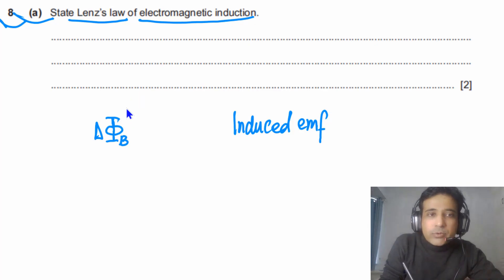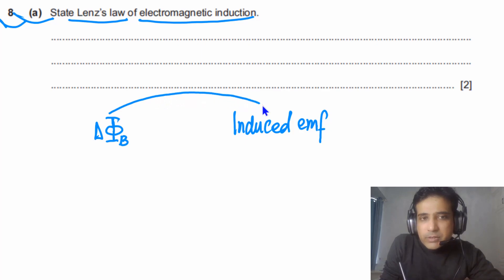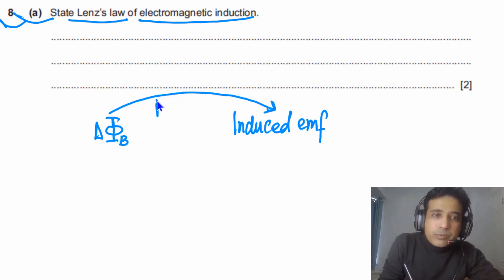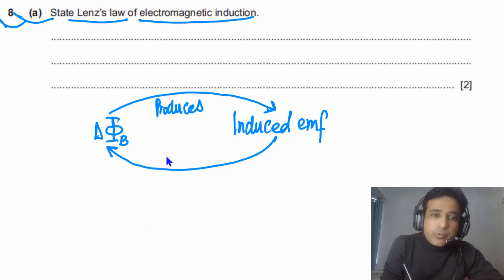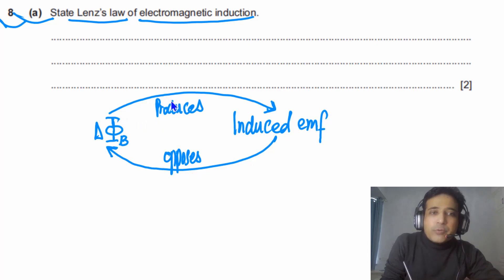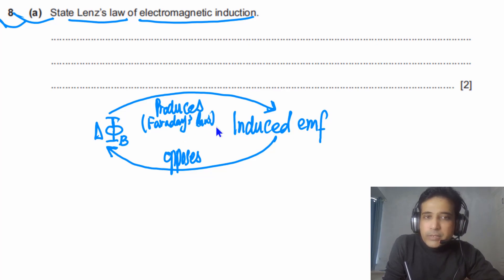Faraday's Law simply tells us that if there is a change in magnetic flux linkage, it will produce an induced EMF in a conductor. Induced EMF will oppose the change in magnetic flux linkage — so we can say EMF opposes. This is what Faraday's Law is telling us, and the opposition part is Lenz's Law. This is how these two laws link with each other.